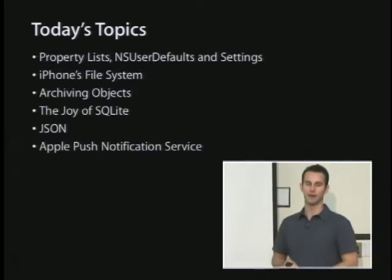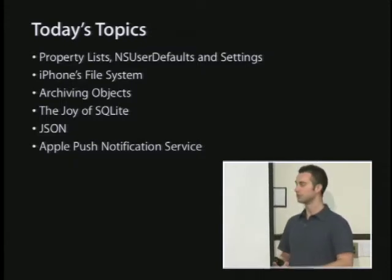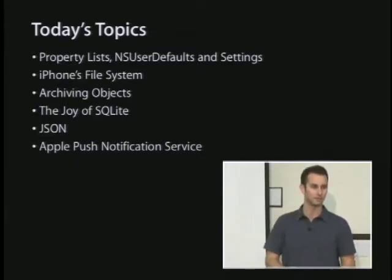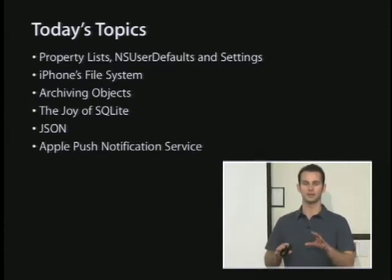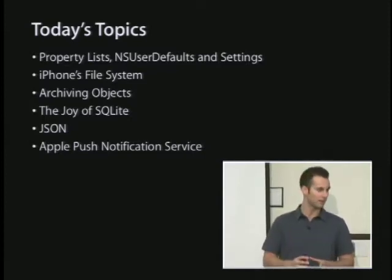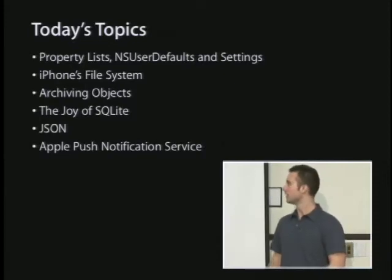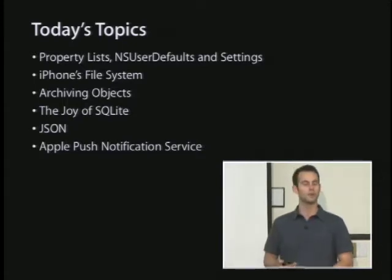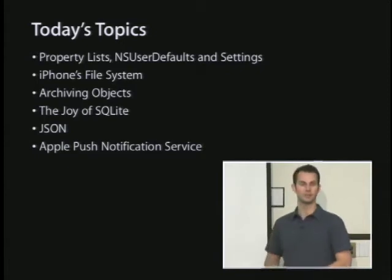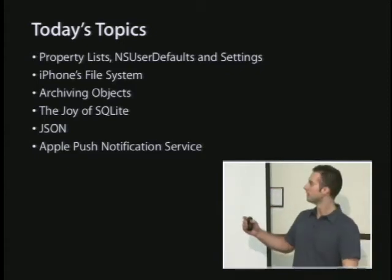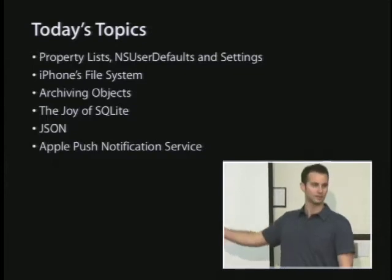We're going to cover property lists, which are a Cocoa staple for storing simple data. NSUserDefaults, which is layered on top of property lists. Also, if we have time, settings bundles, which are ways to add small bits of UI to the settings application on the iPhone that set NSUserDefaults. Then we'll go into the iPhone's file system and sandboxing, object archiving, SQLite, JSON, and the Apple Push Notification Service.